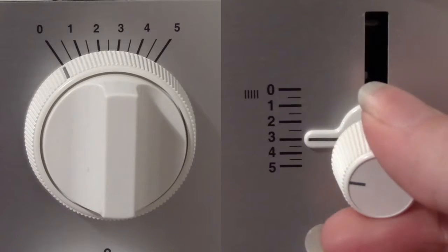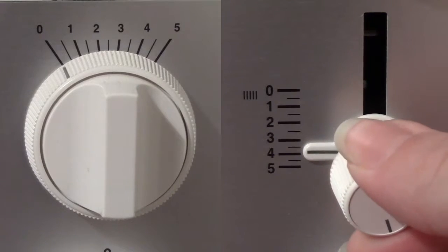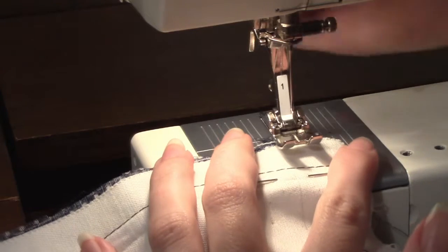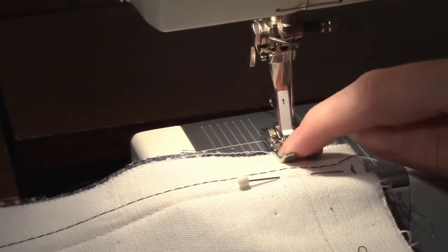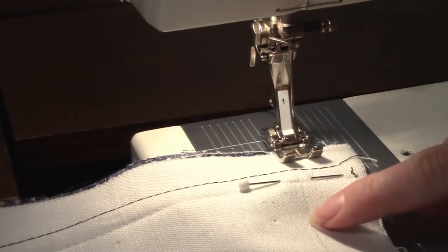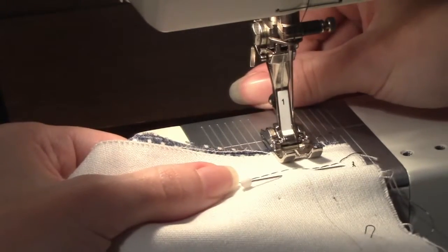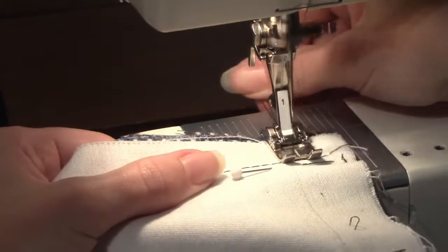On the sewing machine, set the stitch width to zero and the stitch length to four. Place the fabric under the presser foot. Line up the outer edge of the presser foot with the stitch line. Hold the beginning threads and start stitching. Do not backstitch.